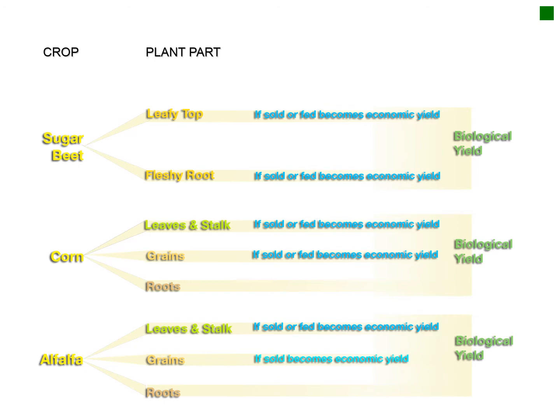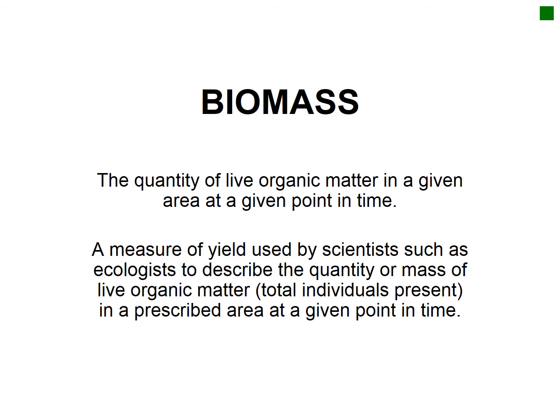The biomass of the plant is the quantity of organic matter produced by a plant in a given area over a given time period. Biomass is pretty much a very direct indication of how big the plant has grown.